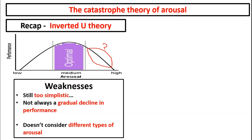The second key focus is that the inverted U theory was criticised because it didn't take into account different types of arousal. So what we have to do is look at the third theory, which takes into account two separate types of arousal. You might remember the definition we used for arousal — the physiological and psychological activation and readiness to perform — but every theory we've looked at so far has been solely focused on physiological arousal.